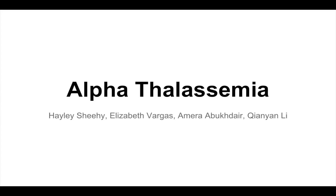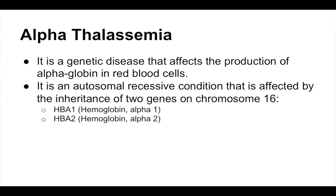Hello. Our presentation will be on a genetic disease called alpha thalassemia. Alpha thalassemia is a genetic disease that affects the production of alpha globin in red blood cells. It is an autosomal recessive condition that is affected by the inheritance of two genes, HbA1 and HbA2, located on chromosome 16.